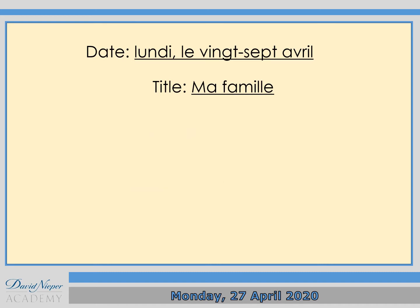If you have your exercise books with you, can you please write today's date and title. The date is le 27 avril and the title is ma famille. If you haven't got your exercise book with you, can you either write in a notebook — like a French notebook — or type it on a Word document and save it into your folder.